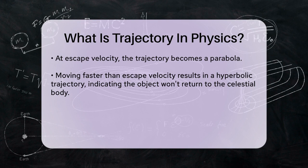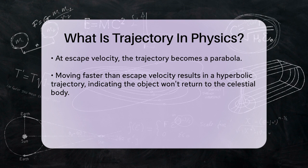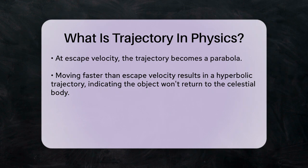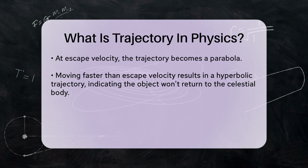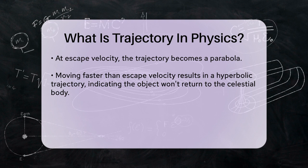Calculating a trajectory involves breaking down the motion into horizontal and vertical components. For a projectile like a golf ball or a cannonball, you can use trigonometry to determine the initial velocity components. The horizontal motion is usually constant, while the vertical motion is affected by gravity, causing the object to accelerate downwards.